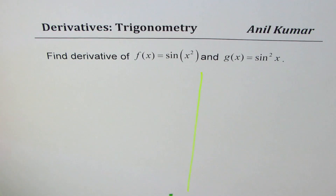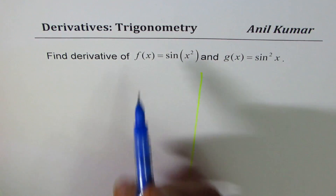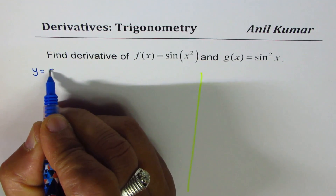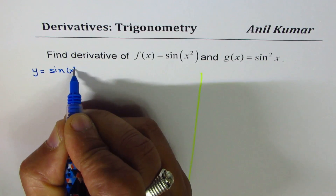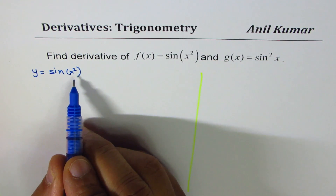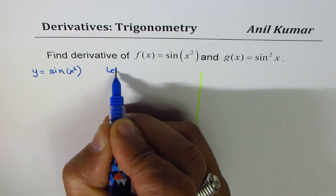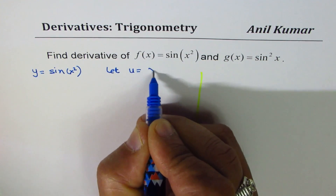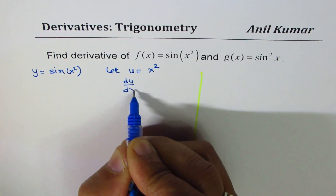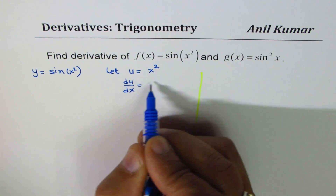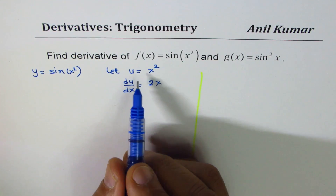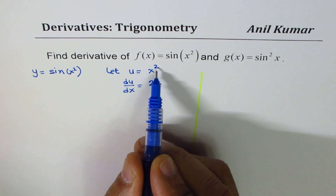Let me begin by writing y = sin(x²). To understand it better, let's apply the method of substitution. We'll say let u = x², in which case du/dx equals 2x — we're differentiating x² with respect to x.